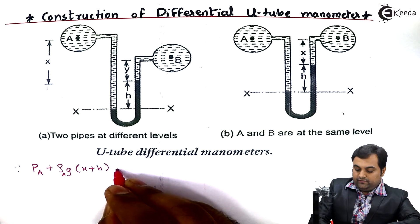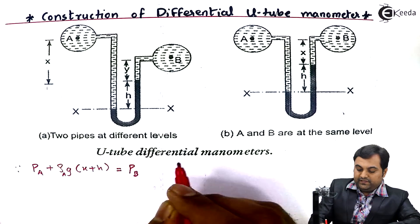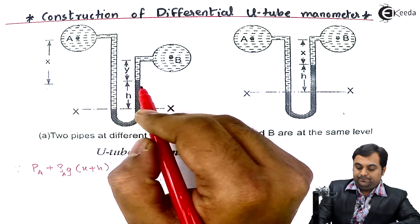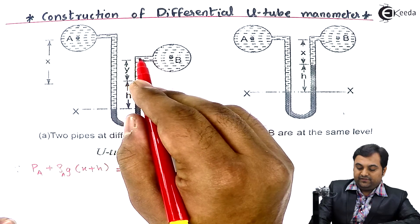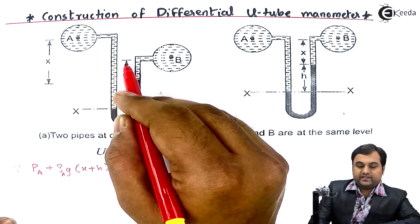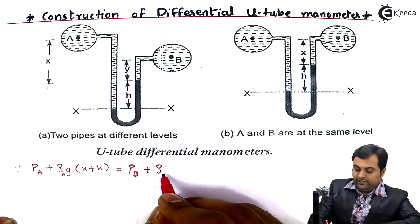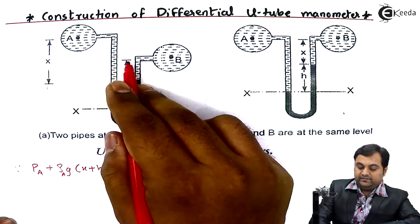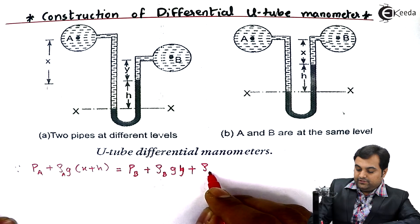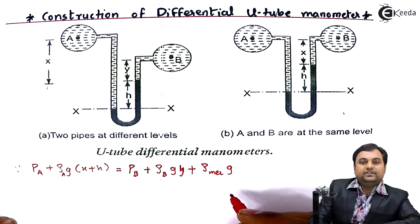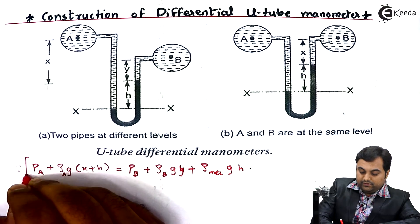For the right limb, we write: pressure Pb of pipeline B, plus the pressure exerted by the fluid of height y, which is ρb · g · y, where ρb is the density of fluid in pipeline B, plus the pressure exerted by the mercury column, which is ρmercury · g · h, where ρmercury is the density of mercury, g is acceleration due to gravity, and h is the height of mercury.